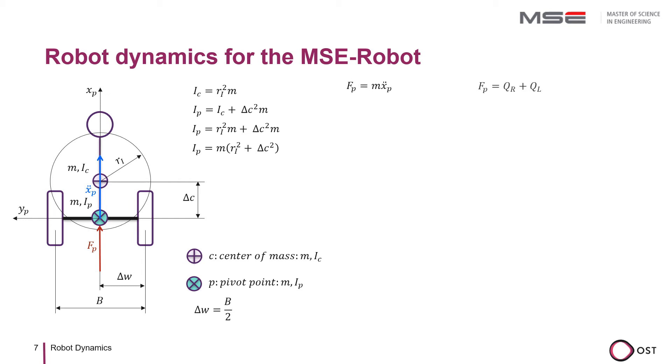The force FP is, of course, nothing other than the sum of the driving forces of the two wheels, which we denote here by QR and QL for the right and the left wheels.